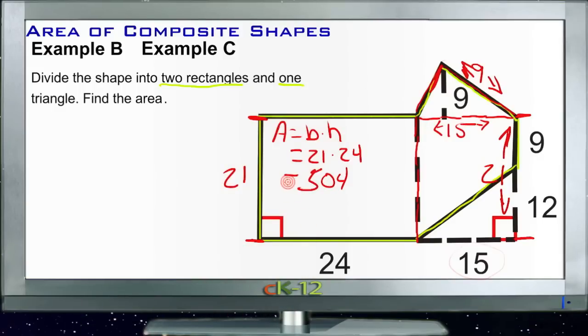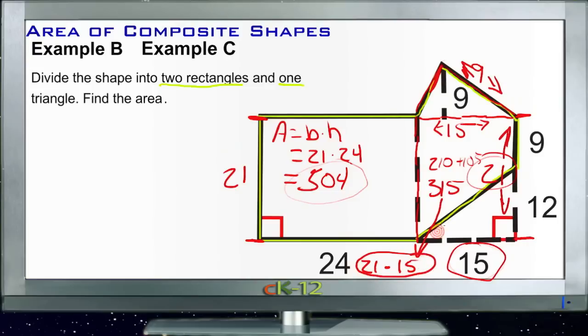This is 504 units here. And then this rectangle over here was 21 by 15. So we have 21 times 10 would be 210, half of that's 105. So we have 210 plus 105, or 315 units. And if we show that calculation, it's 21 times 15, gives us that 315 units for this rectangle here.